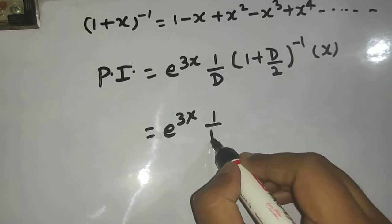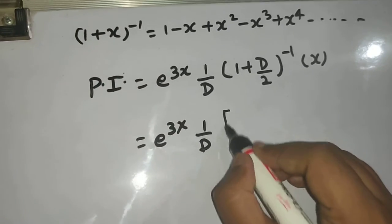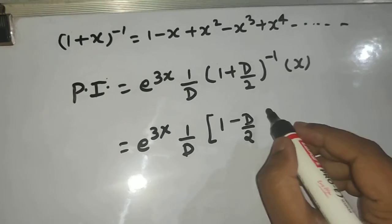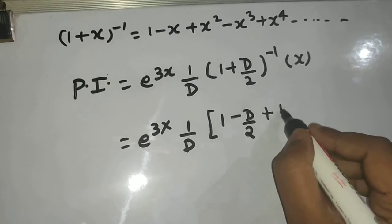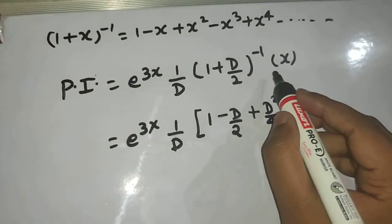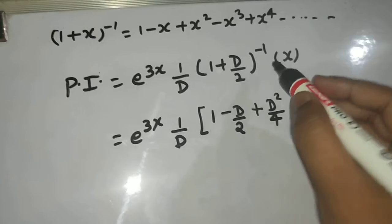So 1 upon d, now this can be written as 1 minus d by 2 plus x square, so d square by 4. I will not write the further term because I know first derivative is 1, second derivative is 0.